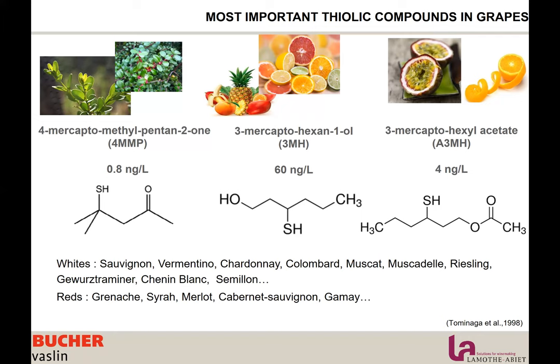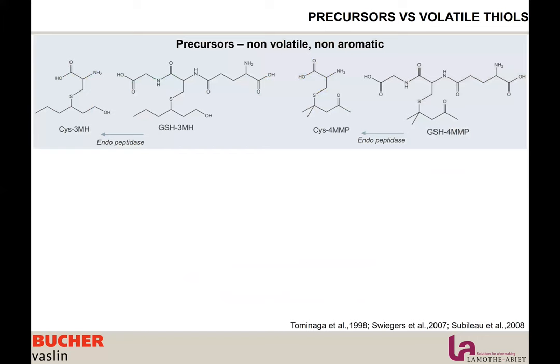When we transform 3-MH into acetate 3-MH, we are increasing the sensory perception. These compounds are present in grapes and are synthesized during the ripening process as precursors. We find our 3-MH and 4-MMP, but they are attached to other molecules — in grapes they are attached to a cysteine or a glutathione.